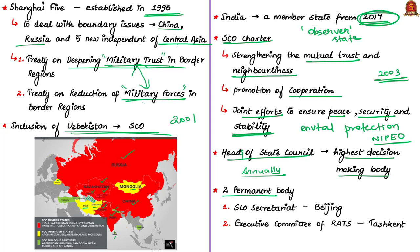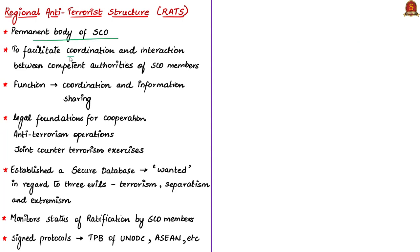There are two permanent bodies: the SCO Secretariat and the Executive Committee of the Regional Anti-Terrorist Structure (RATS). The SCO Secretariat is in Beijing and SCO RATS is based in Tashkent, Uzbekistan. SCO RATS is a permanent body whose main purpose is to facilitate coordination and interaction between various authorities of SCO member states to fight against three evils: terrorism, extremism and separatism. Other functions include coordination and information sharing.